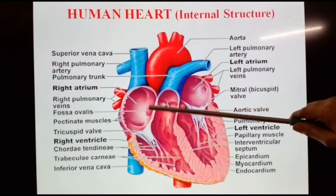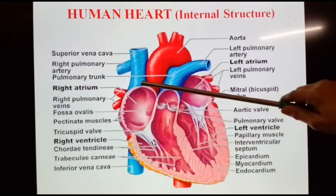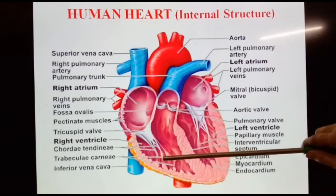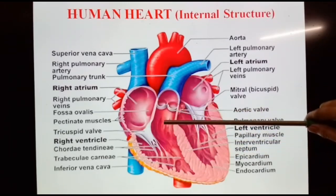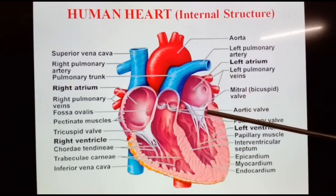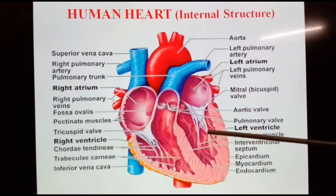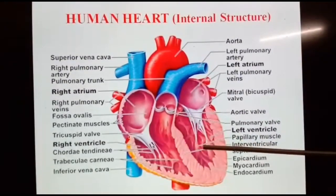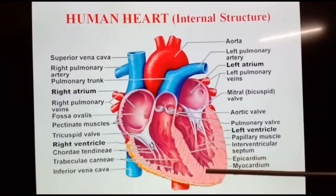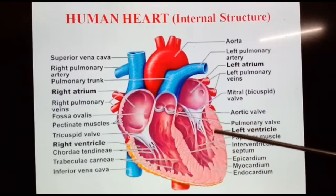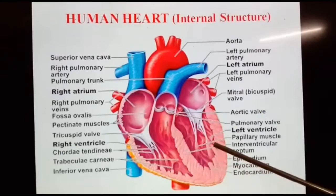The right atrium receives blood from the veins and pumps it into the right ventricle. The right ventricle receives blood from the right atrium and pumps it to the lungs where it is loaded with oxygen through the pulmonary aorta. The left atrium receives oxygenated blood from the lungs and pumps it to the left ventricle, the strongest chamber, which sends oxygen-rich blood to the rest of the body. The left ventricle's vigorous contraction creates our blood pressure. One of the primary functions of the human heart is to pump blood throughout the body, delivering oxygen, hormones, glucose, and other components to various parts.